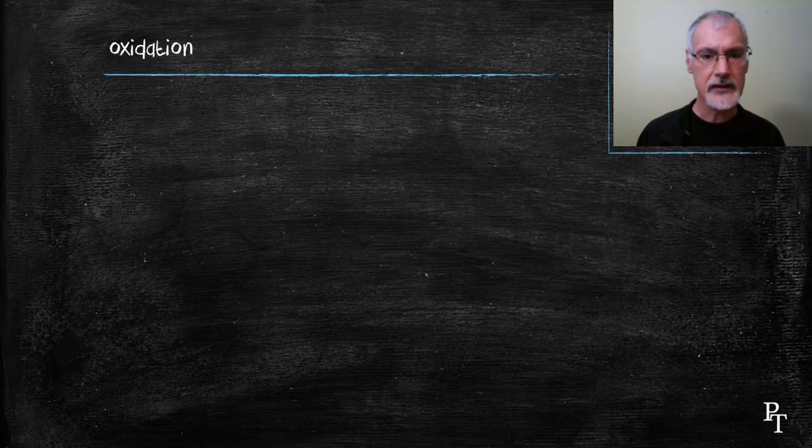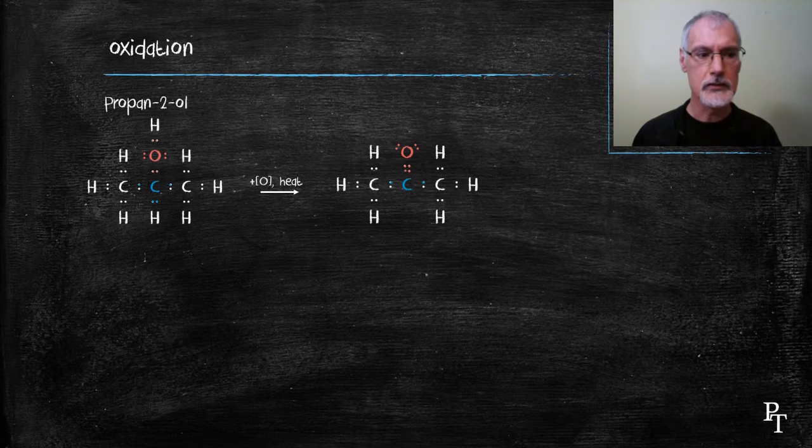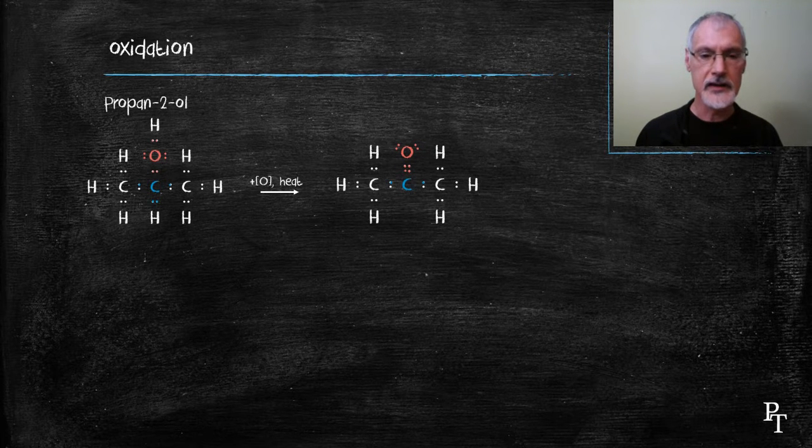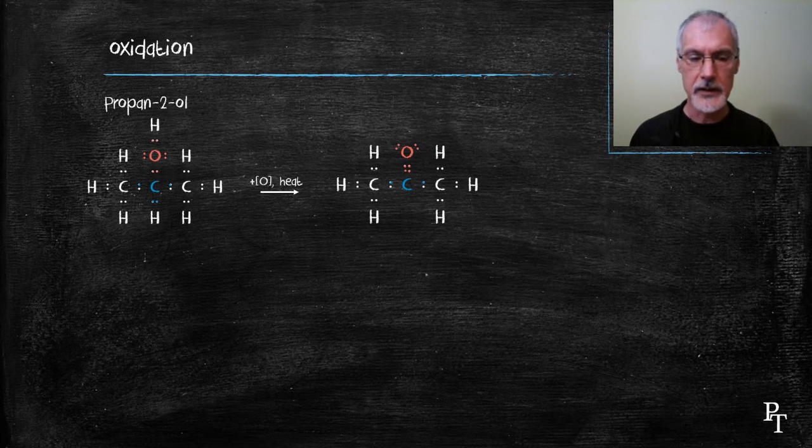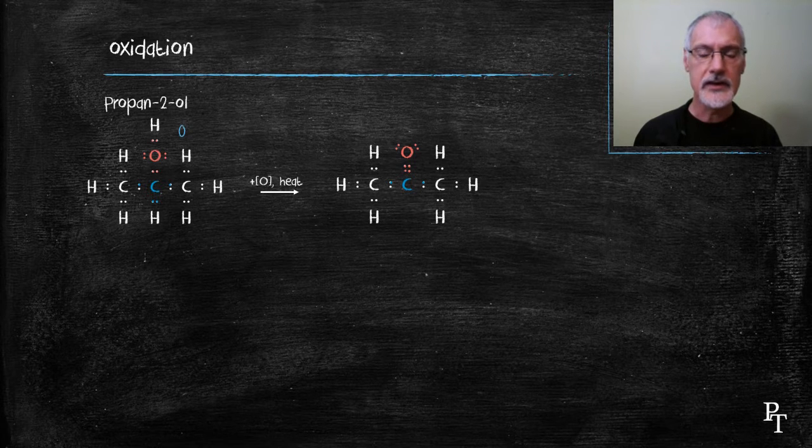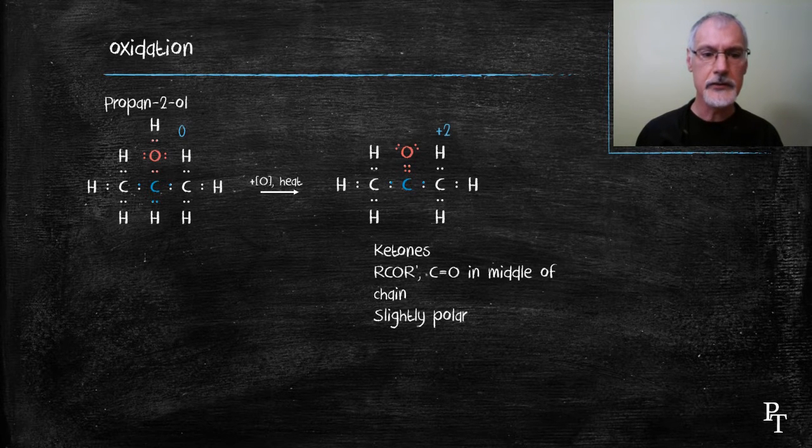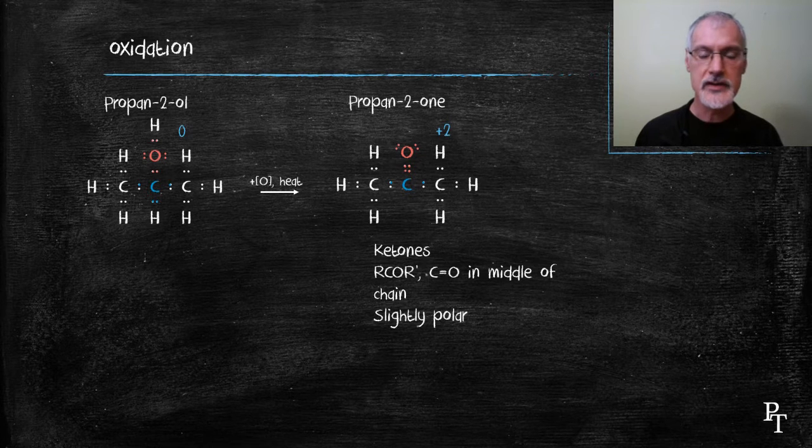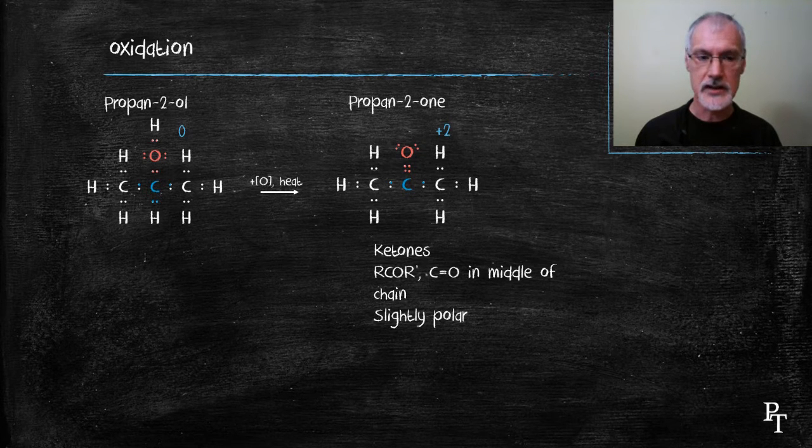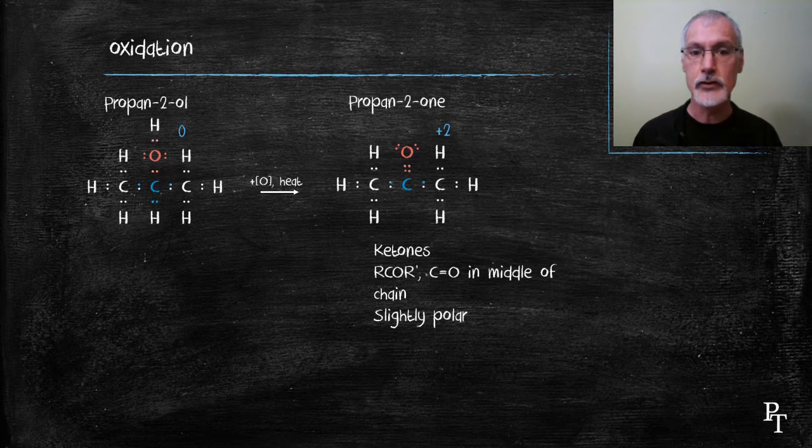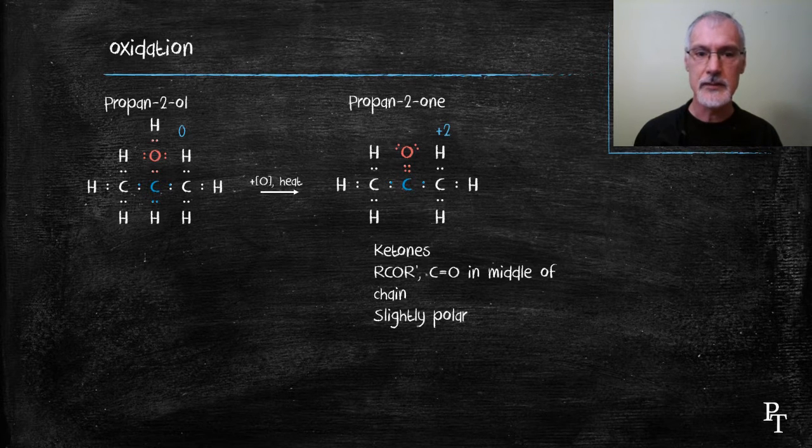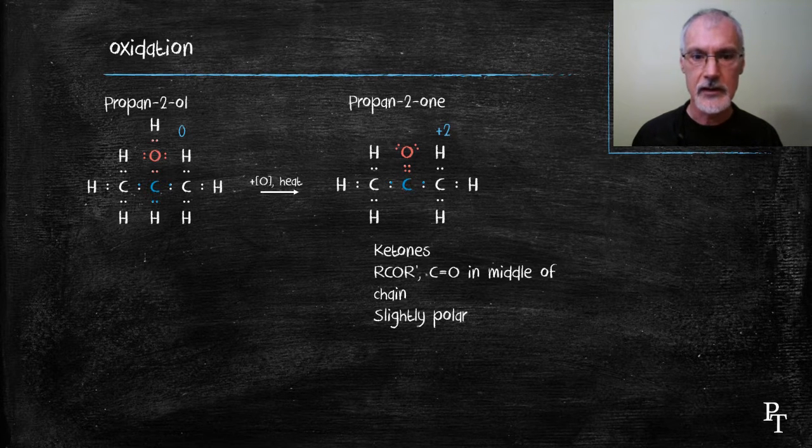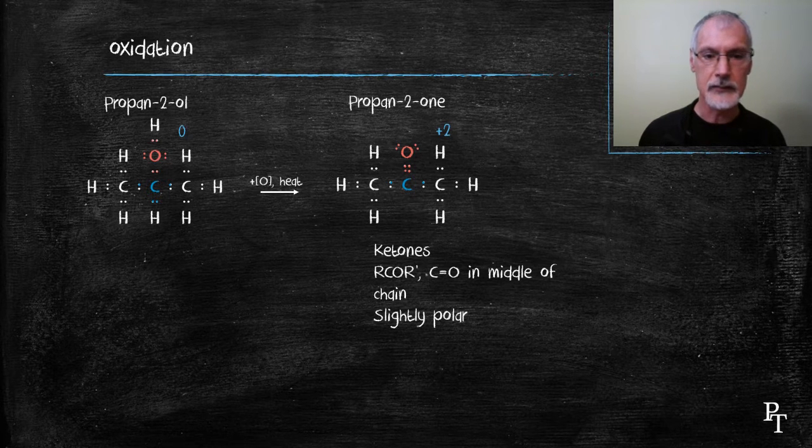If I begin with a secondary alcohol, here shown as propane-2-ol and oxidize it, I produce another class of compounds. These are called the ketones. Ketones are recognized by the presence of the carbon-carbon double bond in the middle of the chain. And this would be called propane-2-one, typical when naming ketones to give the address of the doubly-bonded carbon. These molecules are also slightly polar.